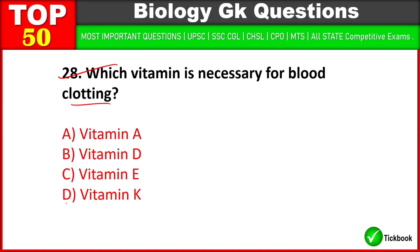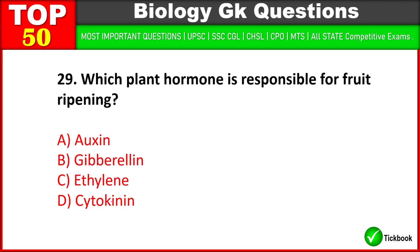The study of plants is called botany. Which vitamin is necessary for blood clotting? Option D is the right answer: vitamin K. Which plant hormone is responsible for fruit ripening? Option C is the right answer: ethylene.